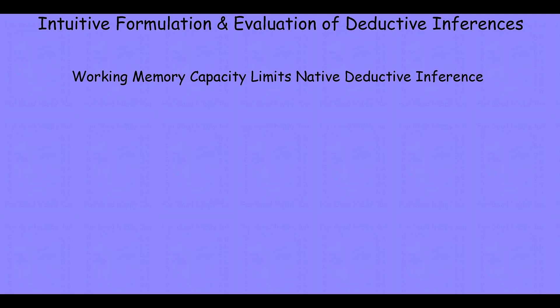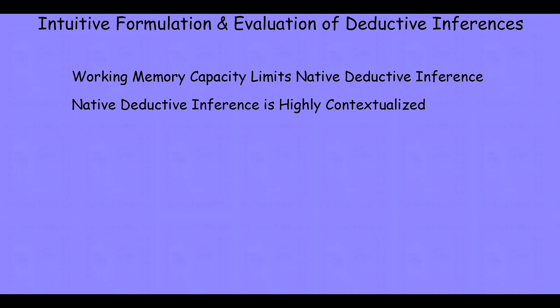As a result, we'll examine the limitations working memory places on our native capacity to formulate and evaluate such inferences. Then we'll turn our attention to that other important property of System 1 inference strategies, namely contextualization. Our native deductive inference capacity is highly contextualized — the information that drives our formulation and evaluation of deductive inferences is disproportionately skewed towards their content and the context in which we come across these inferences.